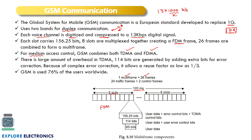The reuse factor is 1/3 and GSM is used by 76% of users worldwide. So GSM is one of the most popular technologies in 2G, where 76% of users throughout the world are using GSM.